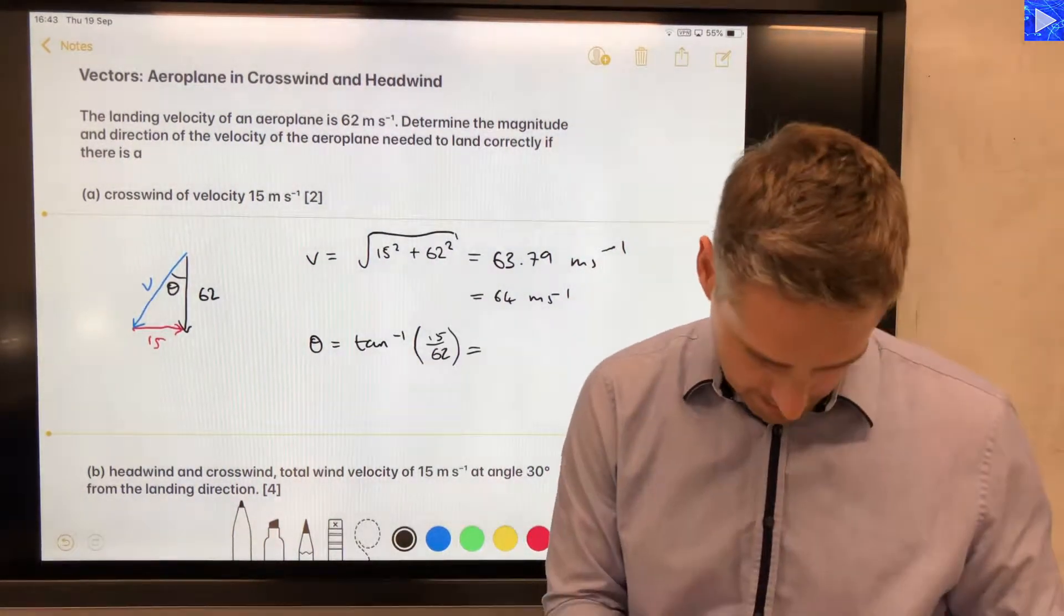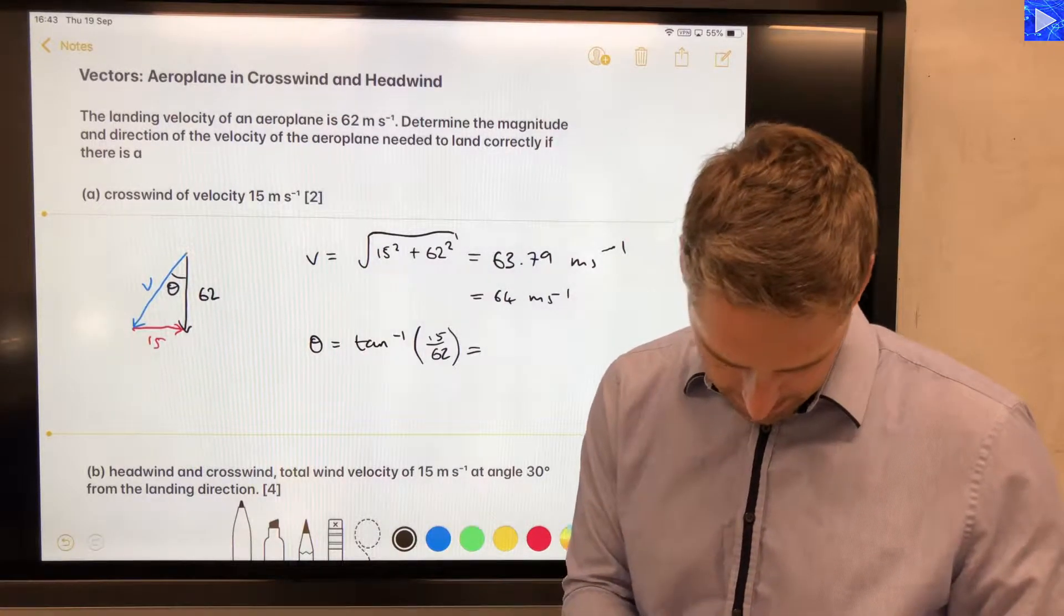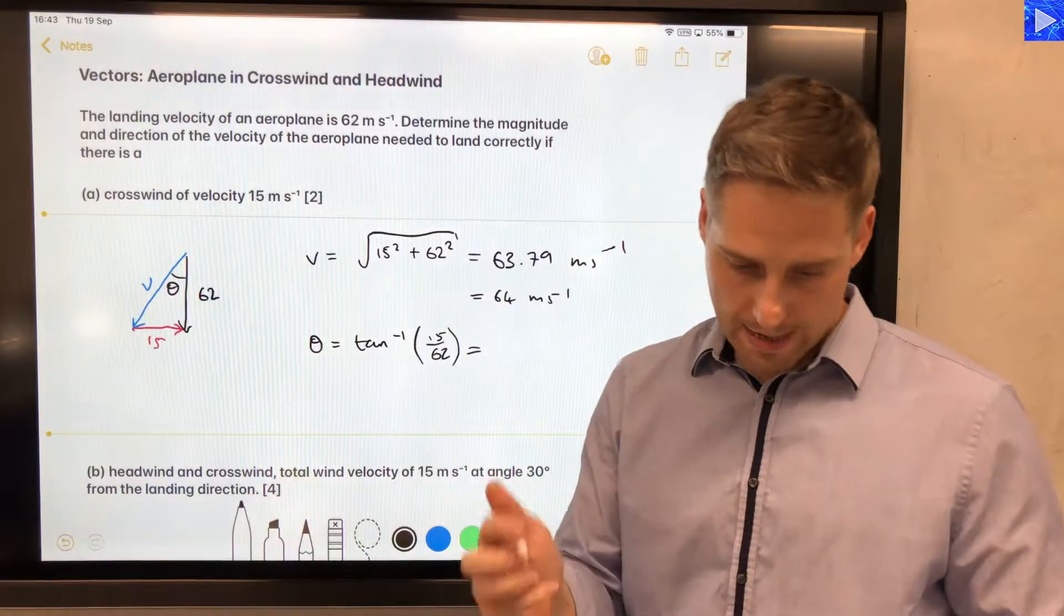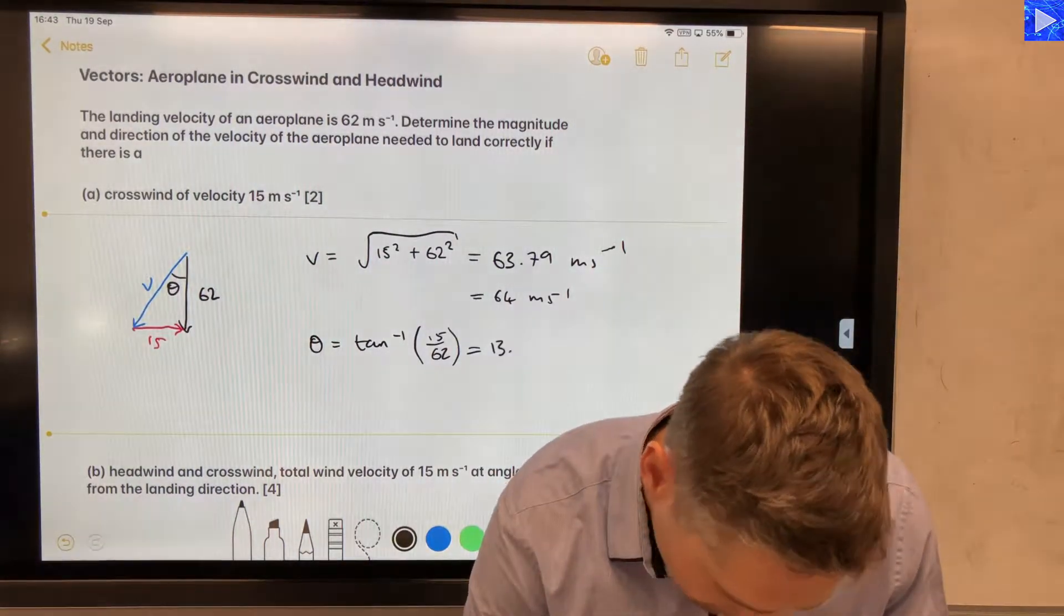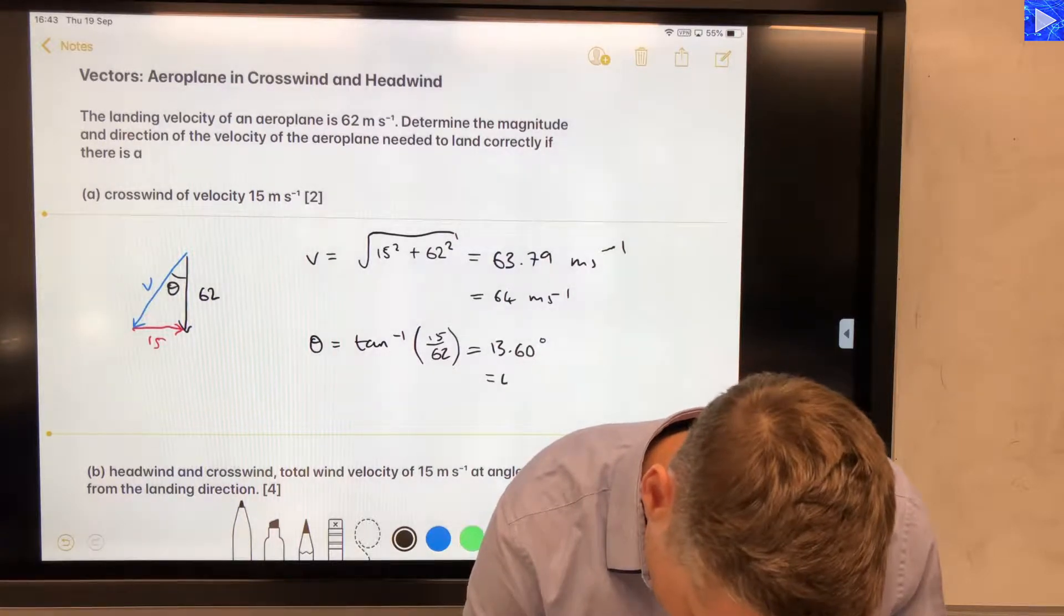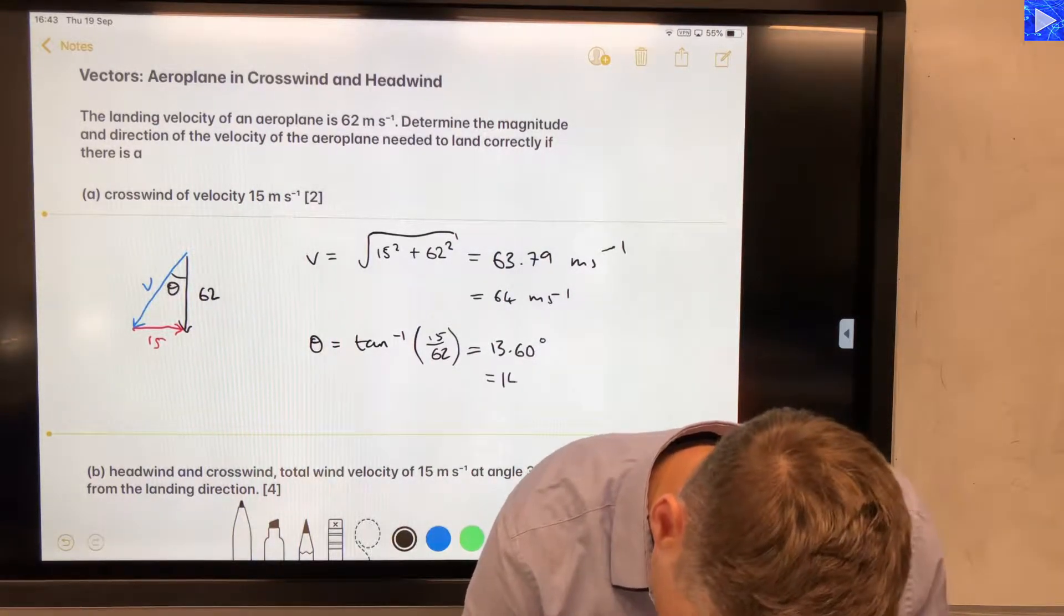So this is inverse tan of opposite over adjacent, so 15 over 62. Okay, so let's put that into my calculator. 15 divided by 62. And that gives me an angle of 13.60 degrees, so we can round that to 14 degrees.